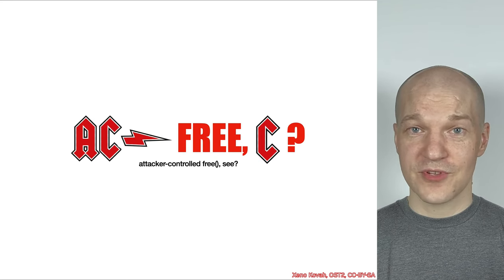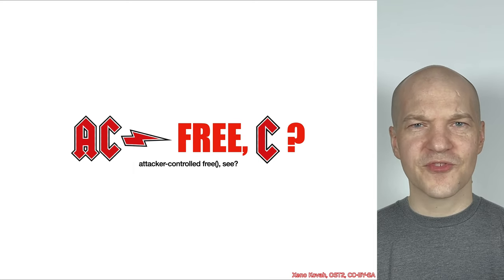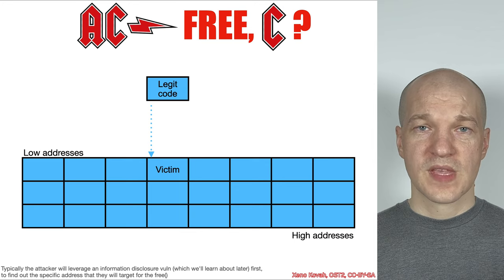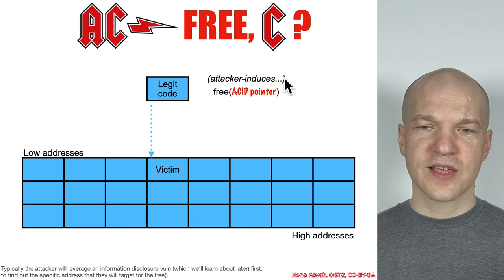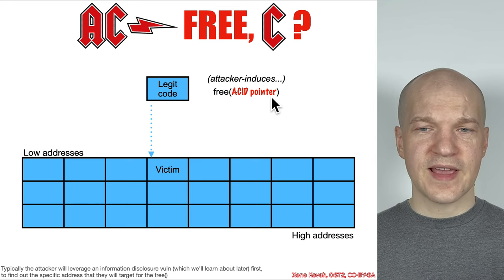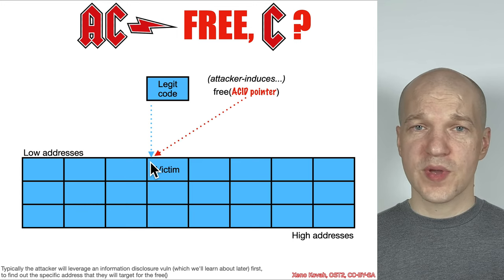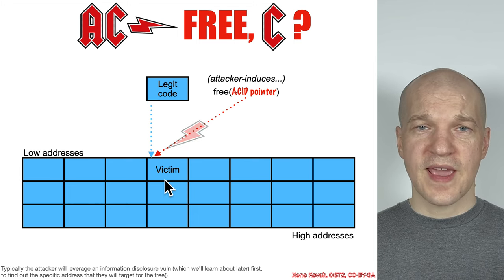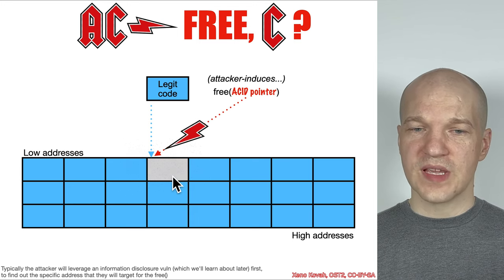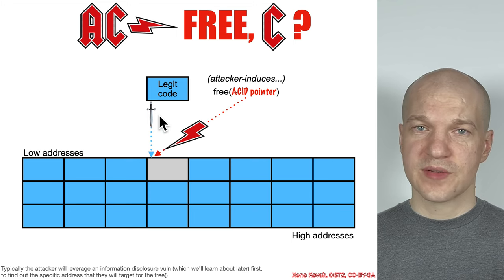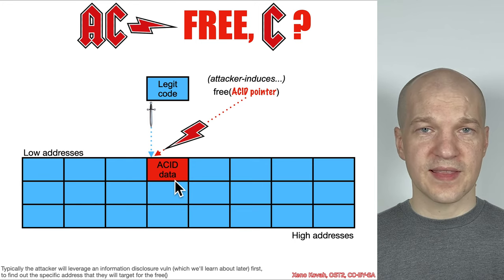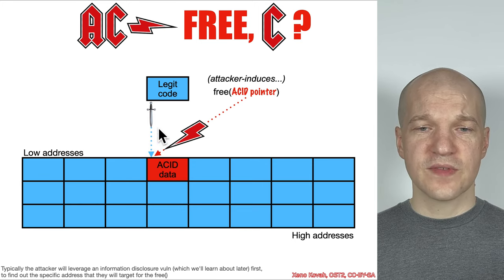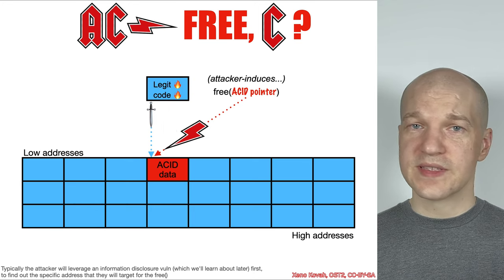Let's look at the visualization of some of these types. First: ACFreeC — attacker-controlled free. In an ACFreeC, the legitimate code has a pointer to its data, which becomes the victim data on the heap, and the attacker induces the calling of free on an attacker-controlled pointer. They can point it wherever they want and cause the freeing of this victim data. Consequently, this legitimate pointer becomes a dangling pointer. If the attacker can cause attacker-controlled data to be filled in at that freed location, then any subsequent use of the dangling pointer means the legitimate code is going to get burned.